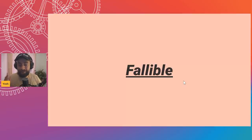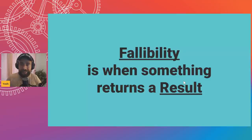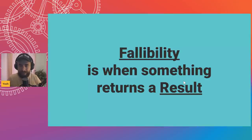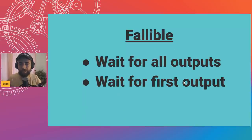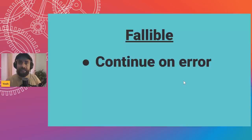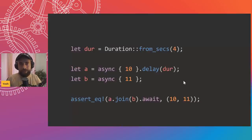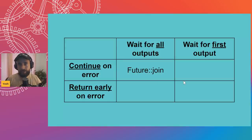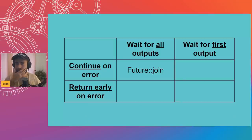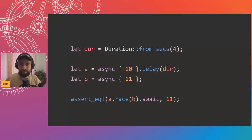Now if we introduce fallibility — futures that return a Result — things become more interesting. We now have two axes: 'wait for all outputs' vs. 'wait for first output,' and 'continue on error' vs. 'return early on error.' We can plot them in a little table. Our original join fills in as 'wait for all outputs, continue on error' — if an error occurs we just keep going.